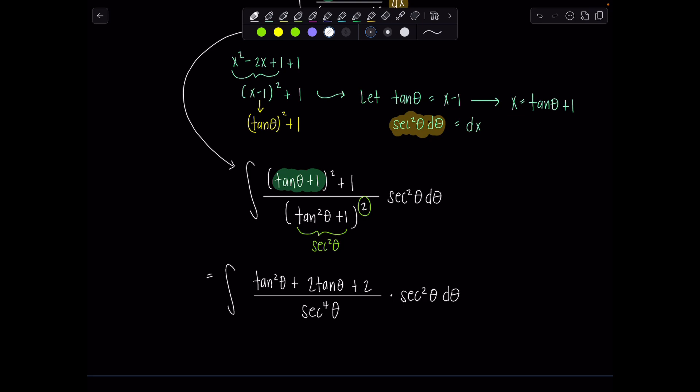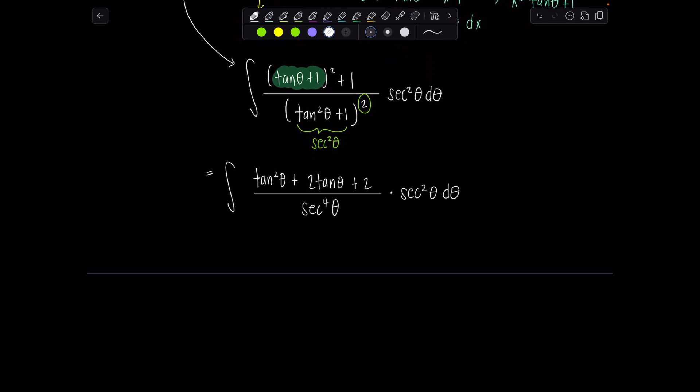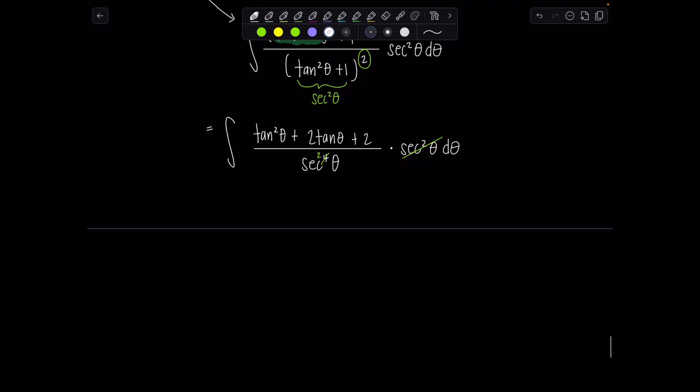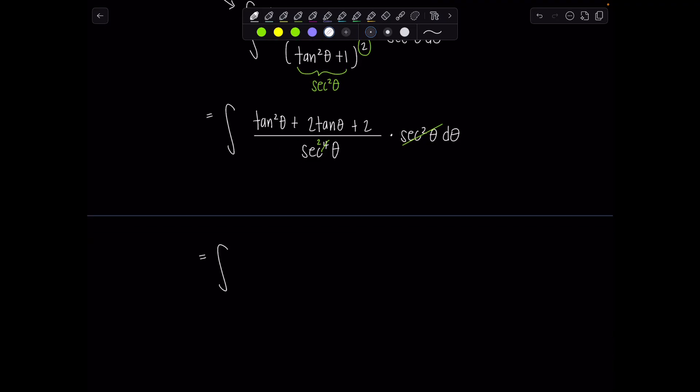Okay, so hopefully you can see clearly at this step, this secant squared theta cancels. This just becomes plain old secant squared theta. And then now I'm going to simplify by rewriting everything in terms of sines and cosines. So tan squared theta is sine squared theta over cosine squared theta plus 2 tan theta, so just sine theta over cosine theta plus 2. And then instead of putting divided by secant squared theta, that's the same as multiplying by cosine squared theta, d theta.